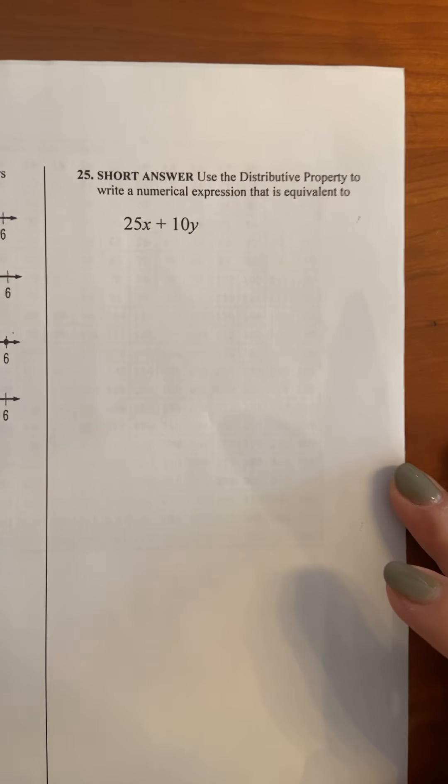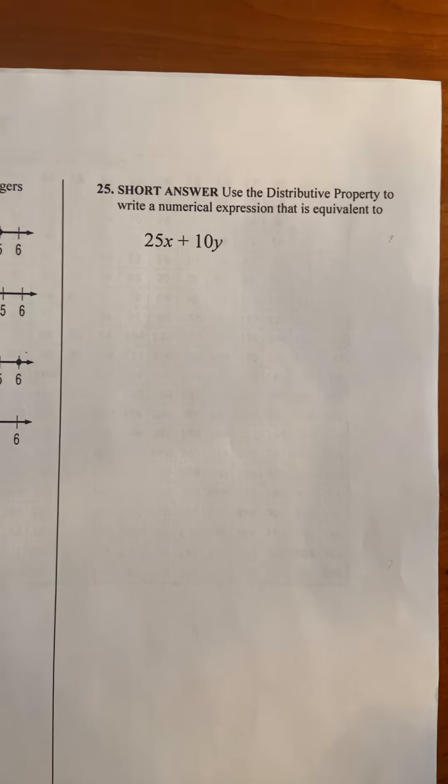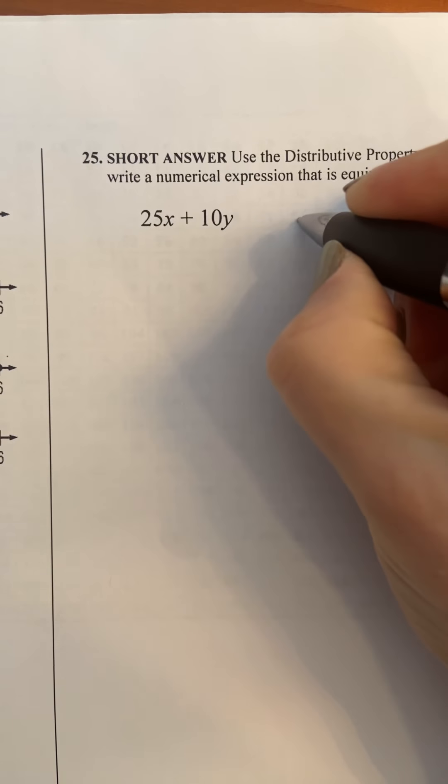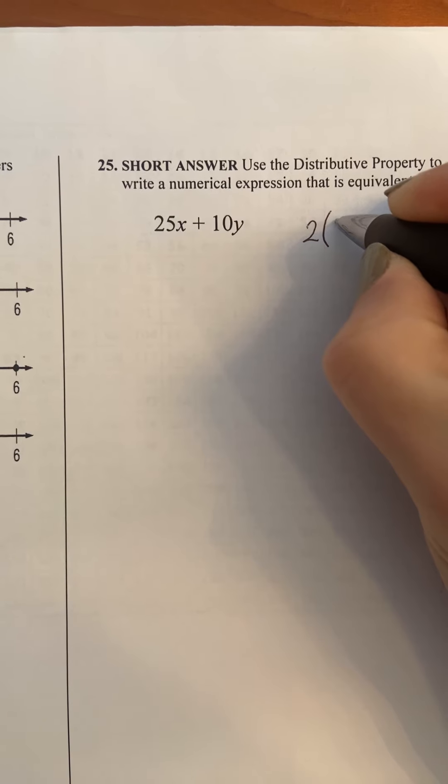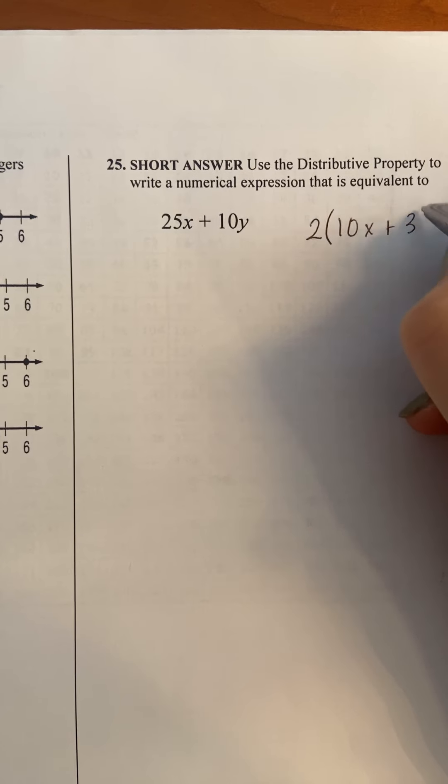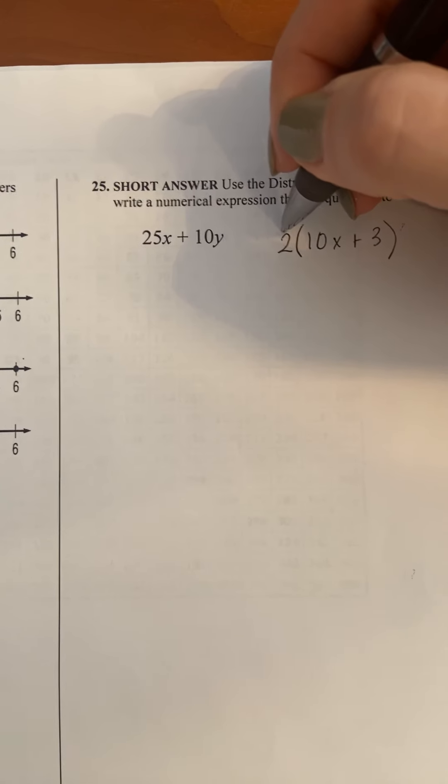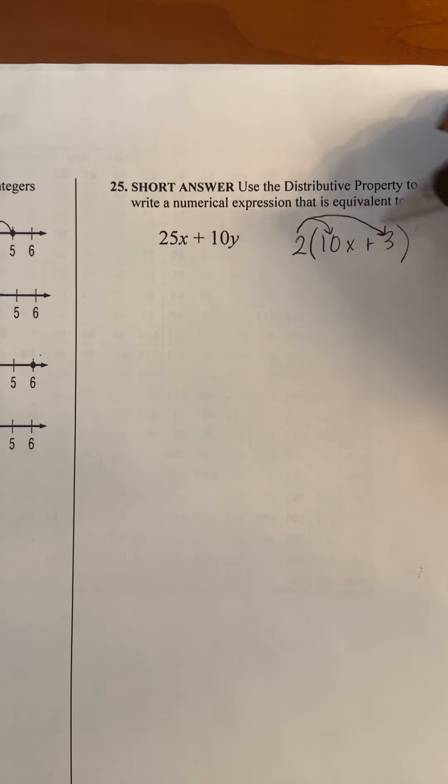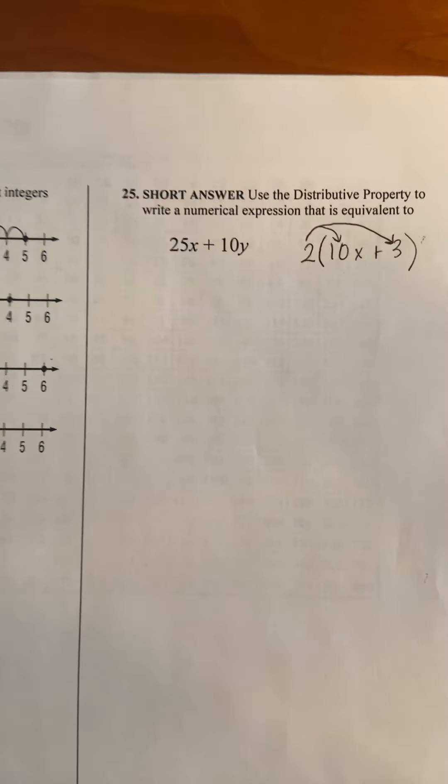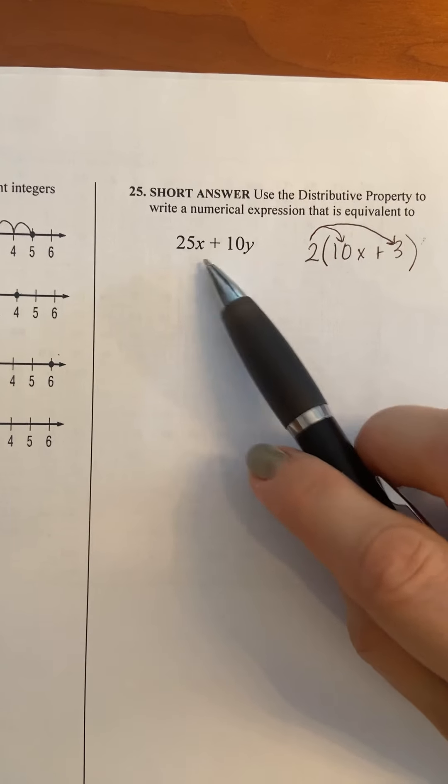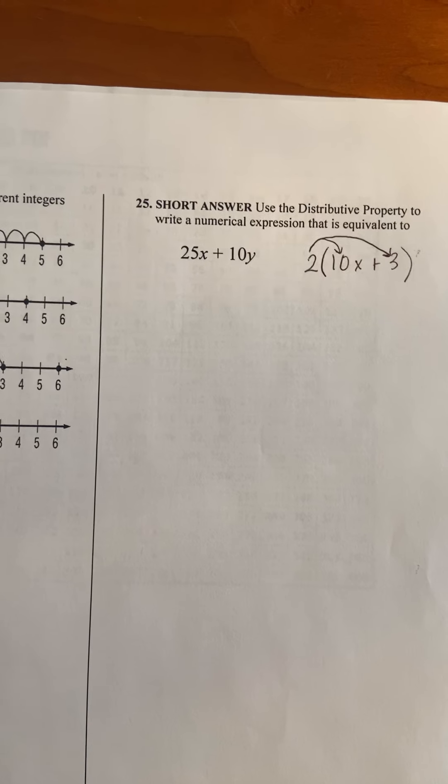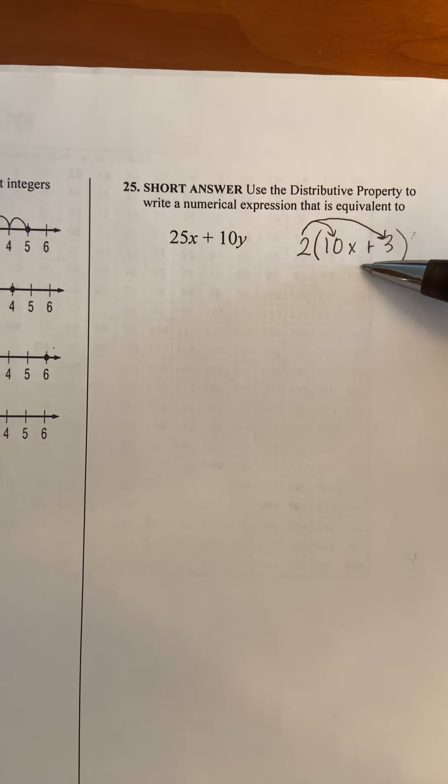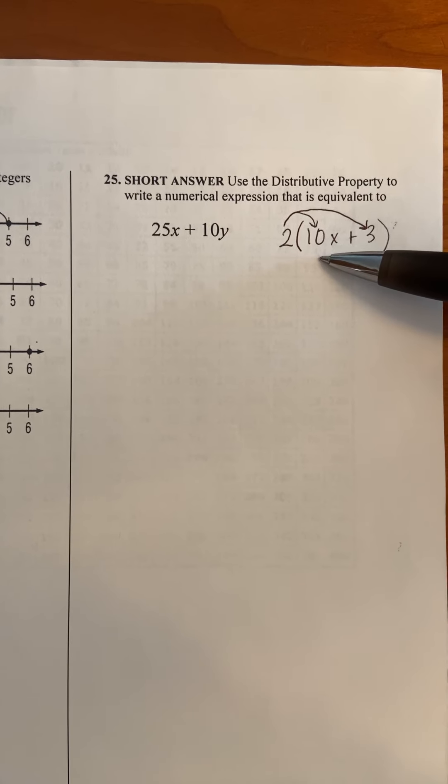And then this last one. Use the distributive property to write a numerical expression that is equivalent. So distributive property, we're used to seeing something like this where you have a number on the outside and then maybe, let's say, 10x plus 3. And we would distribute what was on the outside by using arrows like this and multiply the outside number by both of the terms inside the parentheses. This one, we have an expression with two terms, and the distributive property that they want us to use is to actually factor this and to take it from this and make it look in this form with the parentheses.